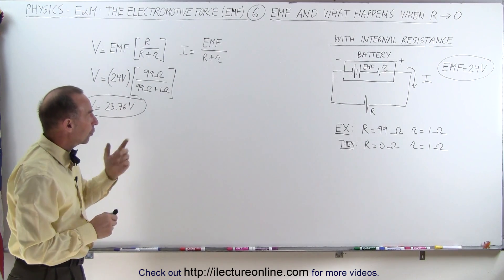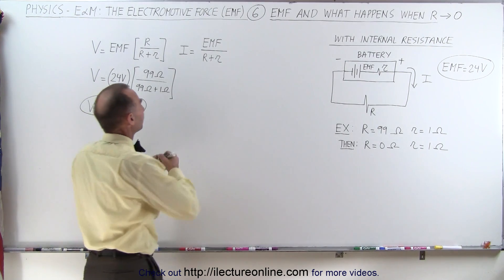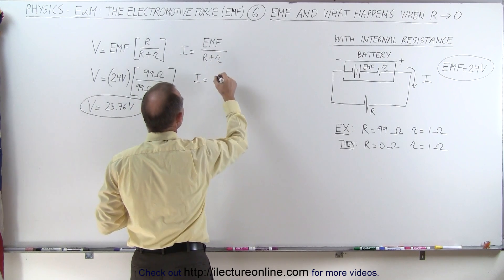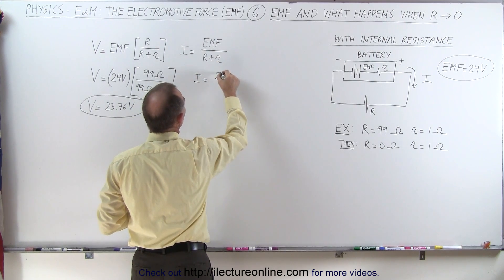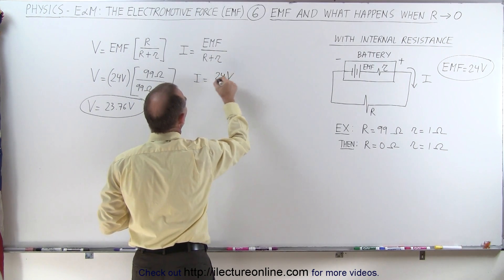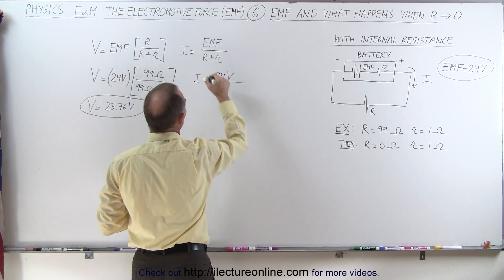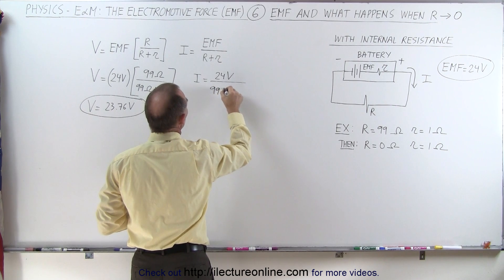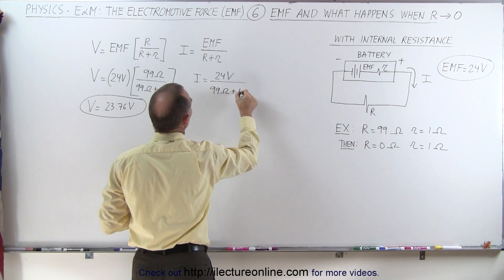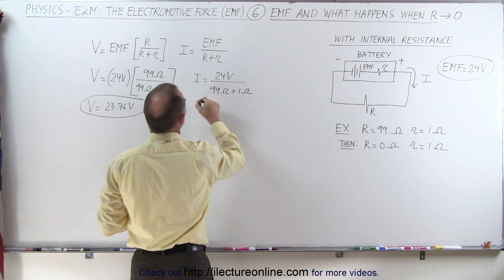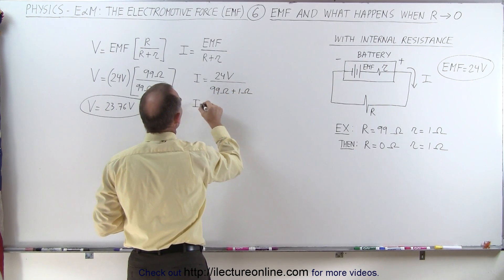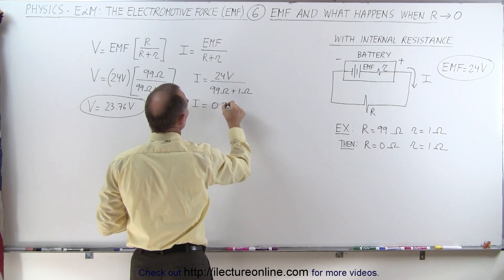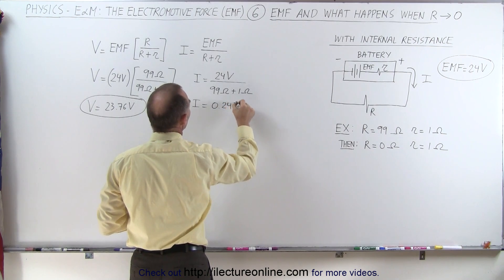The current to the circuit, I, is going to be the EMF — 24 volts — divided by the total resistance, 99 ohms plus 1 ohm, which means that I is going to be equal to 0.24 amps.